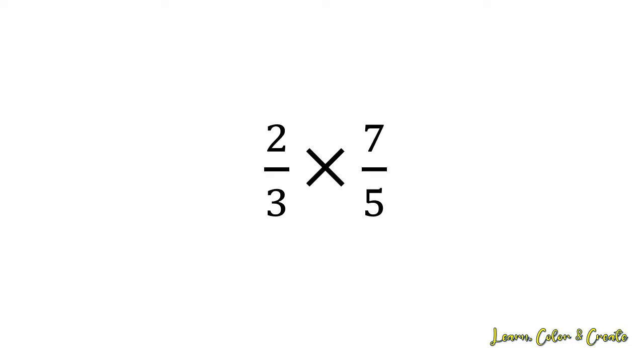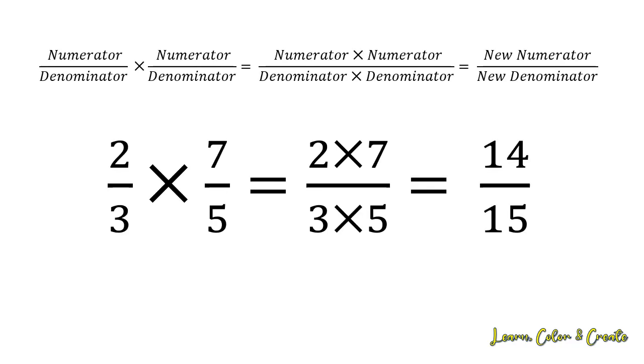Let's look at some examples. If I have 2 thirds multiplied by 7 fifths, I'm going to multiply the numerators 2 times 7 together to get 14, and multiply the denominators 3 times 5 to get 15. That will give me a final answer of 14 over 15.